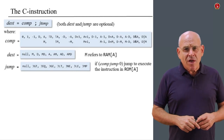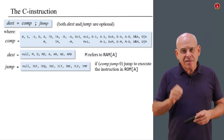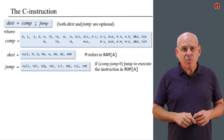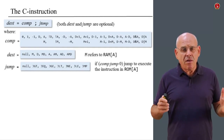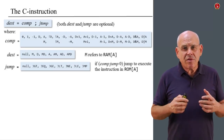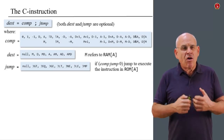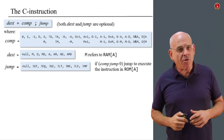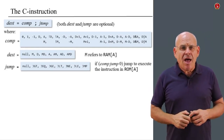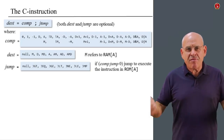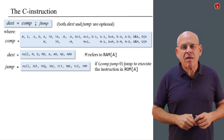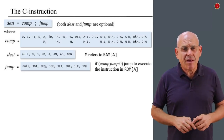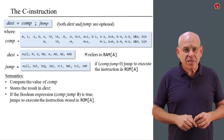What about the jump directive? The jump directive takes a little while to get used to. We have eight possible conditions, and these conditions always compare the result of the computation to zero. Instead of belaboring the point, I'm going to give some examples in just a few minutes, so this will become much clearer once we see them.